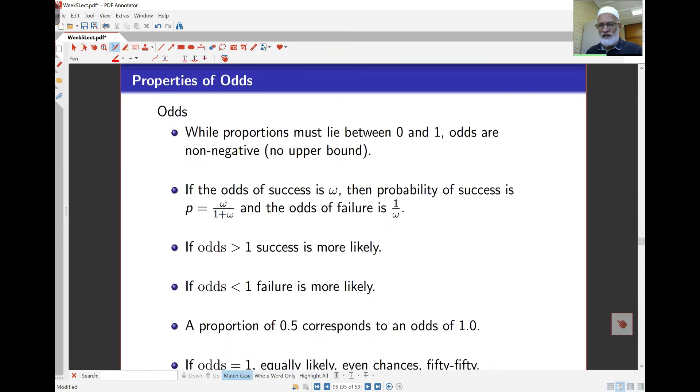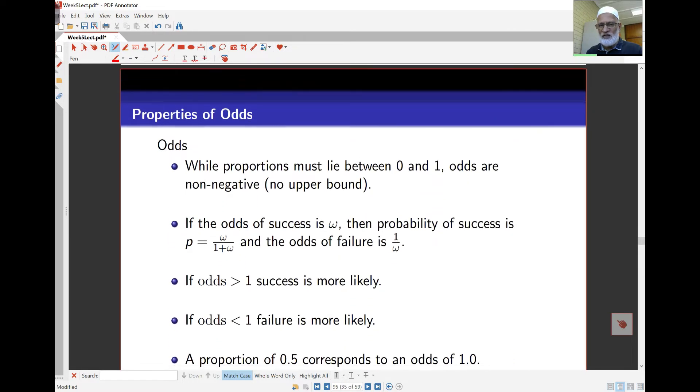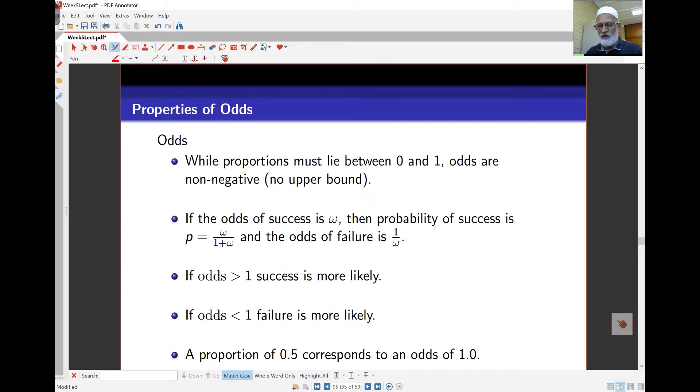Properties of odds: probabilities lie between 0 and 1, odds don't. There's no upper bound. There's no negative, but there's no upper bound.